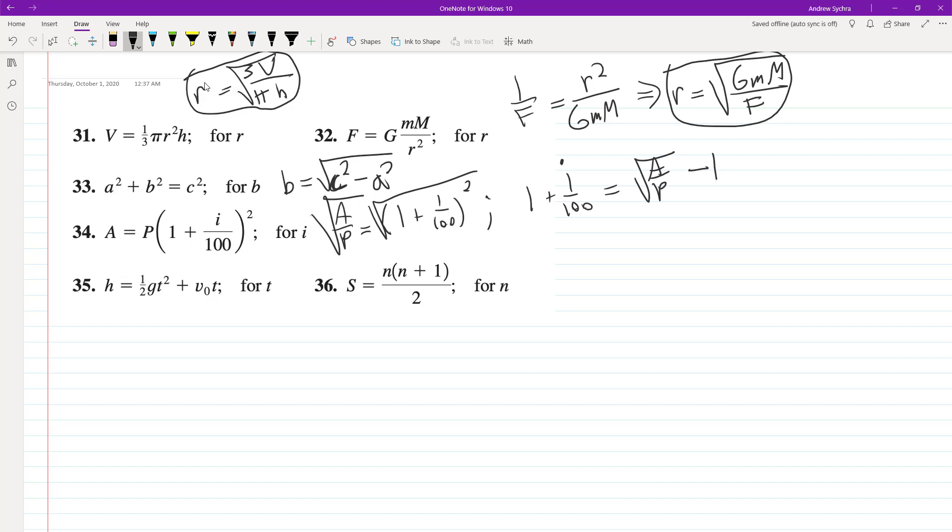So subtract 1 from here and then multiply by 100, and that's how we end up with I. We can leave the 100 on the outside, or you could multiply it through to get 100√(A/P) - 100, but that's fine.